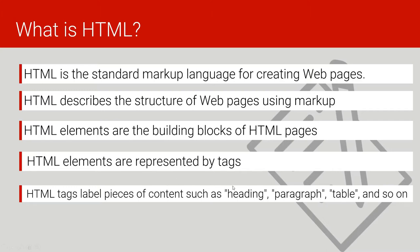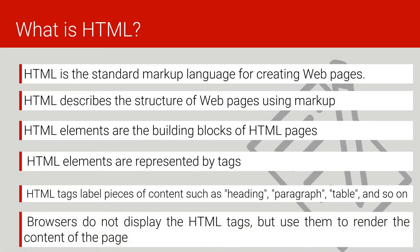HTML tags are nothing but labels for content — headings, tables, lists, and so on, as you'll see in the code you're going to make. Browsers do not display the HTML tags, but they use them to render the content of the page. The browser will use those HTML tags to build the content of the web page.